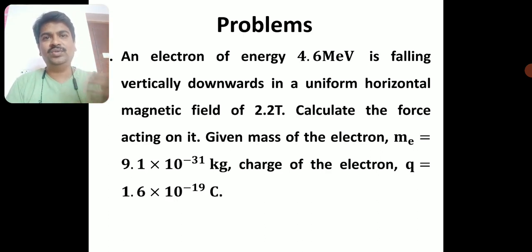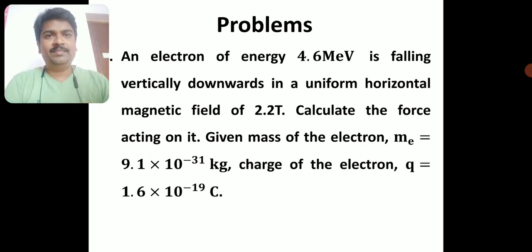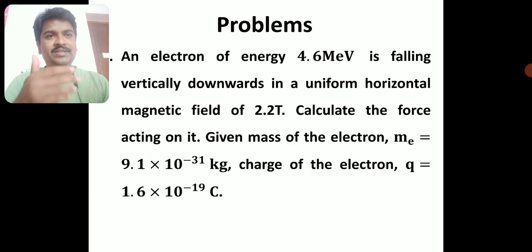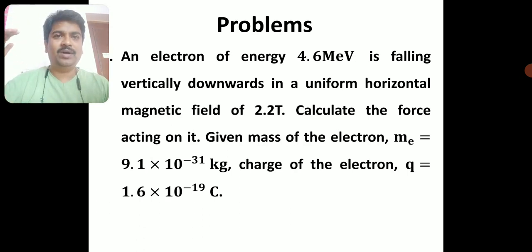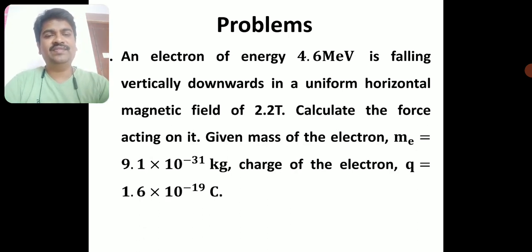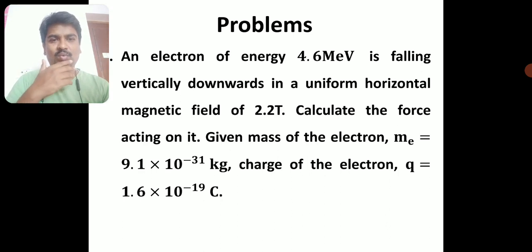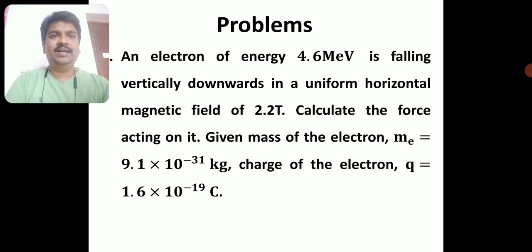I'll read out the problem and solve it step by step. Problem 1: An electron of energy 4.6 MeV — the energy is expressed in mega electron volts — is falling vertically downwards in a uniform horizontal magnetic field of 2.2 tesla. Calculate the force acting on it.